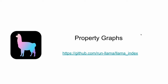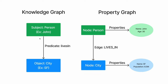Let's start by comparing knowledge graphs and property graphs and understanding their differences. As seen here, knowledge graphs use a triple structure — subject, predicate, and object — to represent a relationship. For example, John is the subject, 'lives in' is the predicate, and SF is the object. Information about John and SF is embedded in these node labels. However, this structure lacks details about these entities, like John's age or SF's population or any other properties.